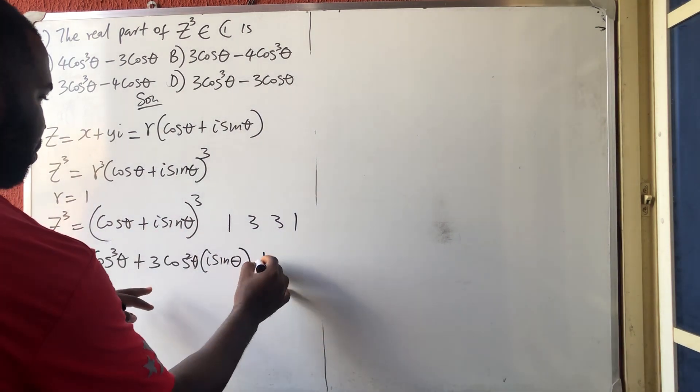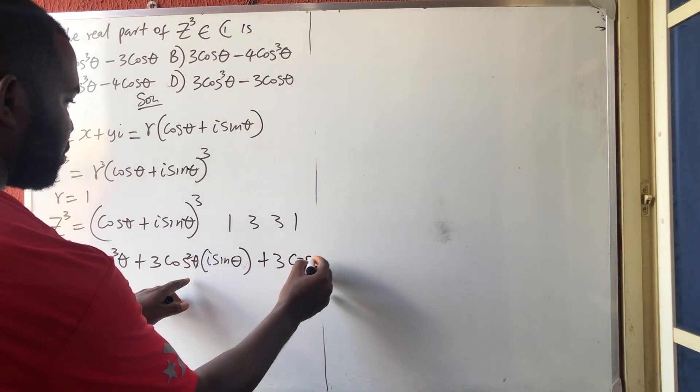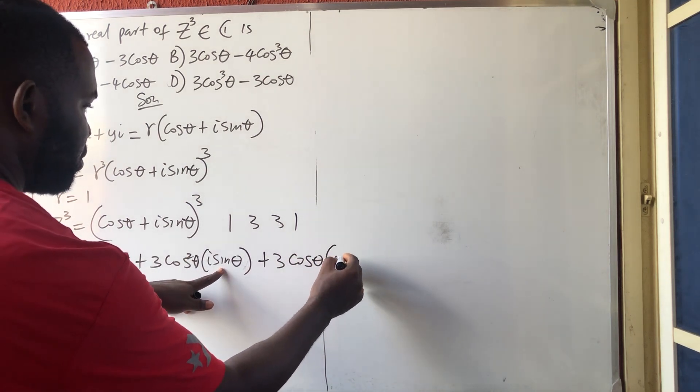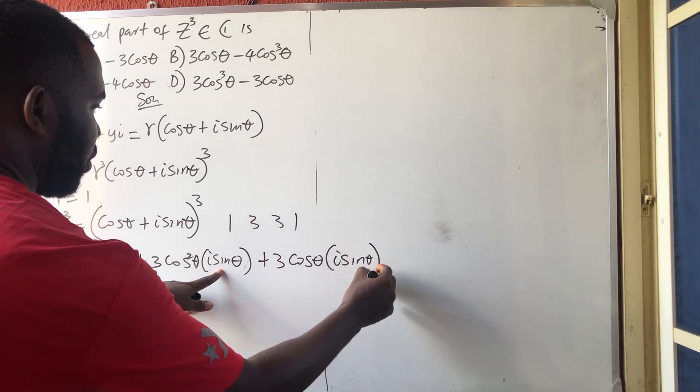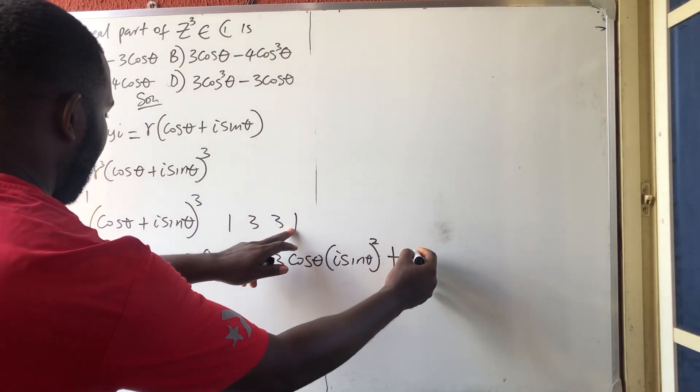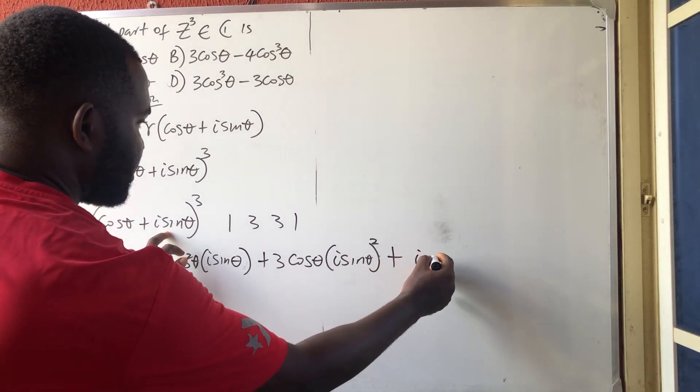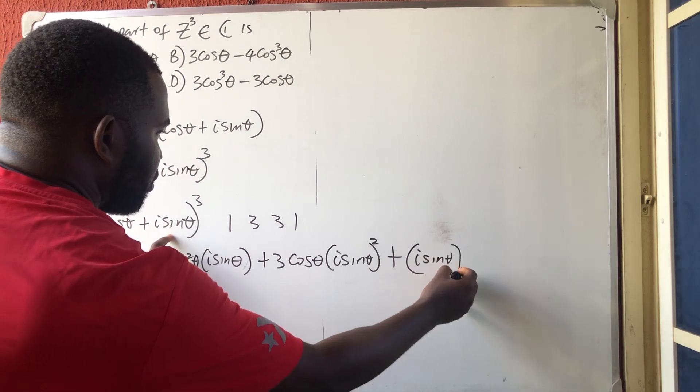Then, the next one is plus 3 again. This one will now be 1 cos theta in bracket of this one will now be 2, i sine theta all squared. Then, finally, 1, which is i sine theta all cubed.